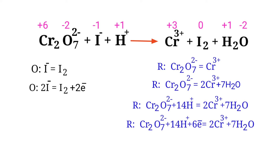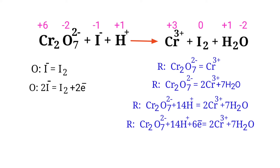Make electron gain equivalent to the electron lost. The electrons lost in the oxidation half reaction must equal the electrons gained in the reduction half reaction. In the oxidation half reaction there are 2 electrons, but in the reduction half reaction there are 6 electrons. To balance the number of electrons, multiply the oxidation half reaction by a coefficient of 3.